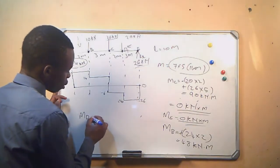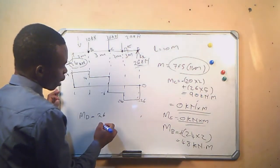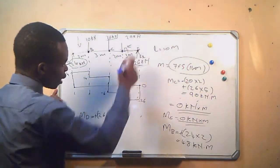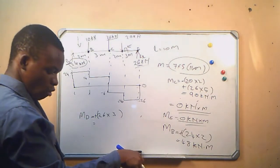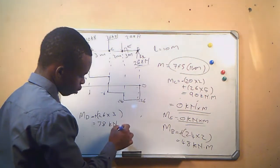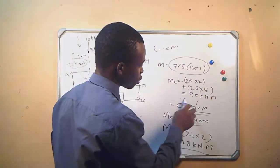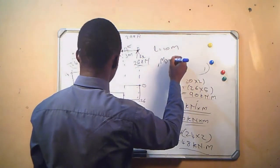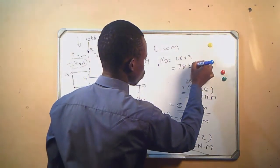For the bending moment at D, we use the right side since it is less complex. The reaction at E is 26 kilonewtons, direction is positive (going up), and the distance between D and E is 3. So MD equals 26 times 3, which gives us 78 kilonewton-meters.